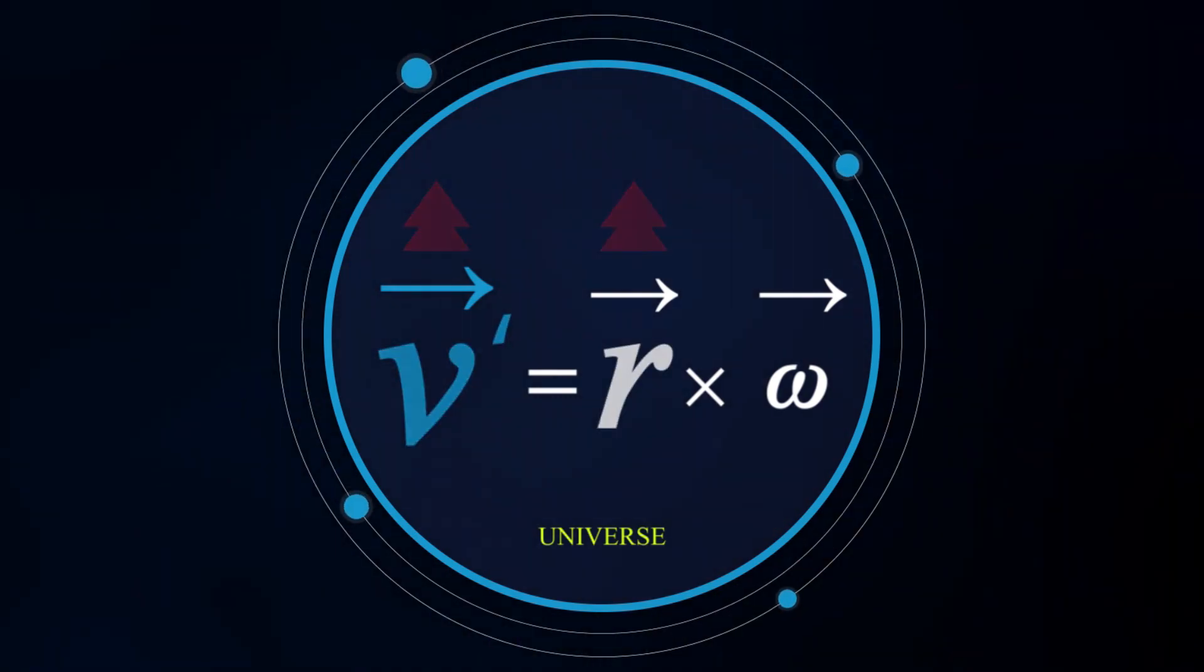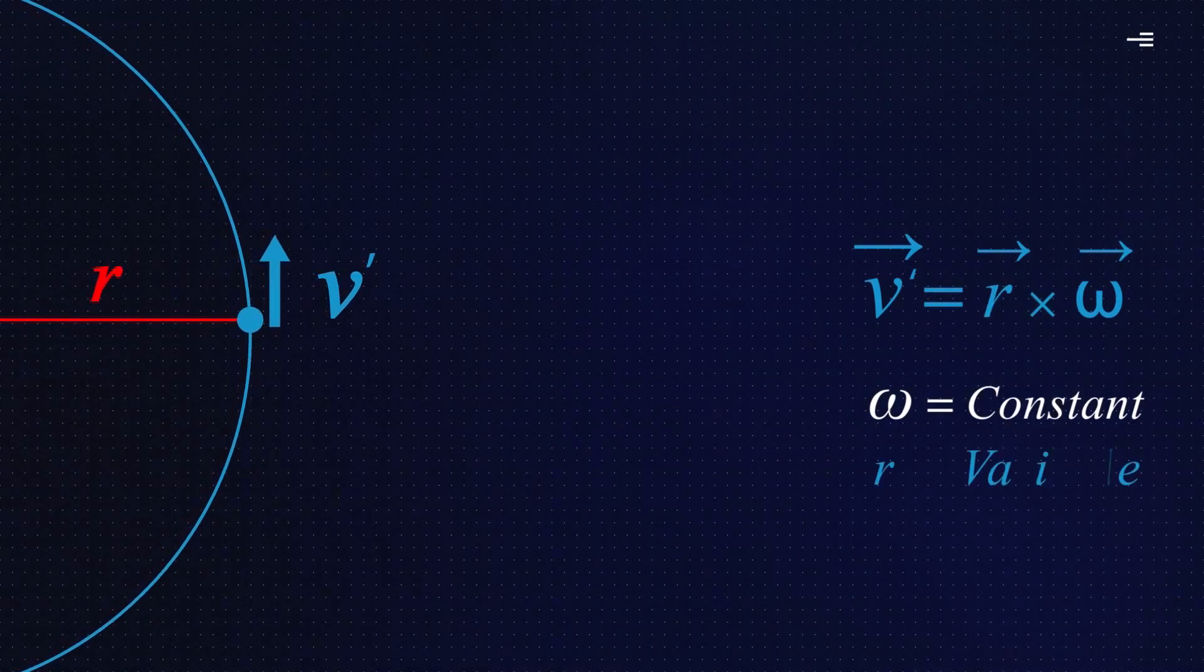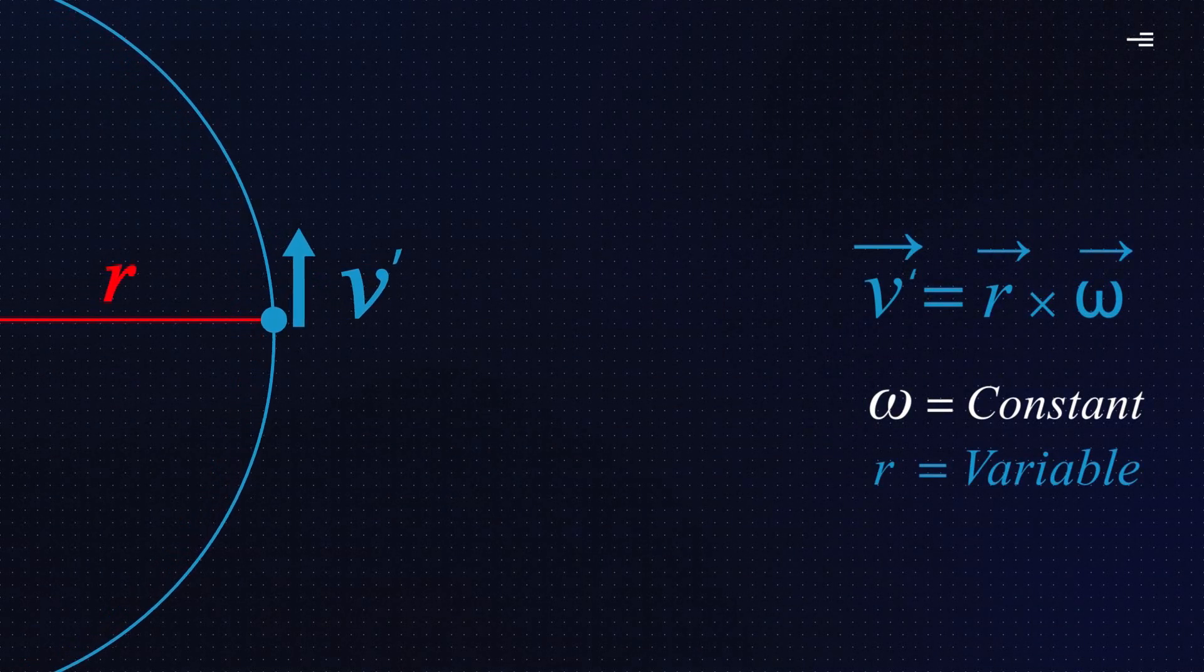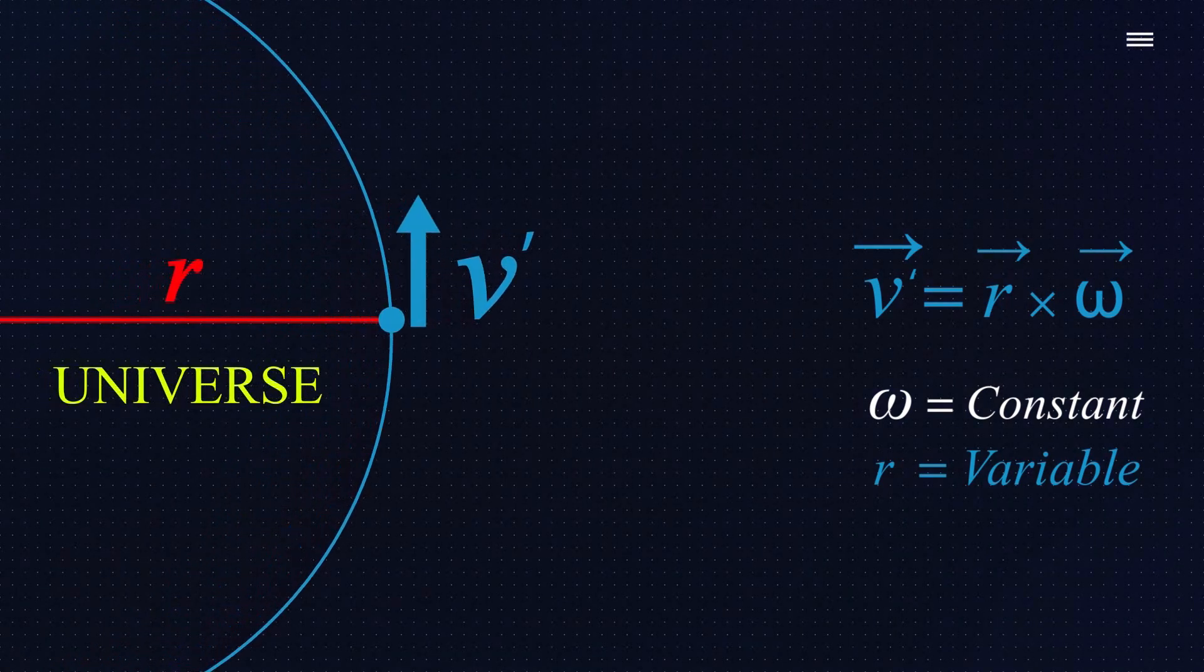The more r, the more our tangential velocity. Accordingly, the variable parameter of the tangential velocity is the radius of rotation from the center of the universe or from where the big bang begins.